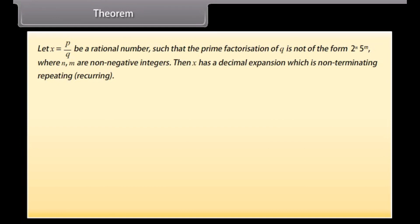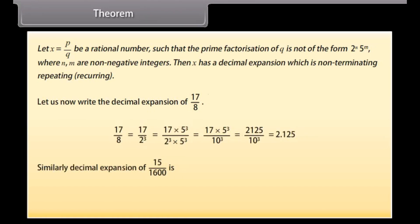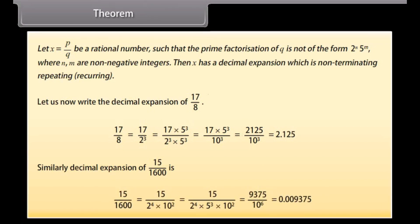Theorem: Let x = p/q be a rational number such that the prime factorization of q is NOT of the form 2ⁿ × 5ᵐ, where n and m are non-negative integers. Then x has a decimal expansion which is non-terminating repeating (recurring). For example, the decimal expansion of 17/8 and 15/1600 = 0.009375 are computed using this approach.